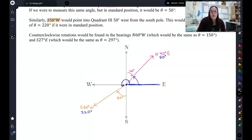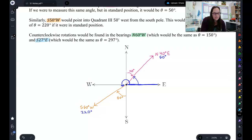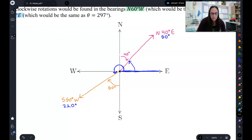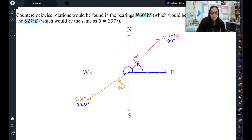So now that we've done that, I would like you to try two more. I want you to try north 60 degrees west, plot where it is on here, and then find the standard position angle, and south 27 degrees east. Plot it on here, and then find what it would be as a standard angle from the positive x-axis. So pause the video, try to plot those two just to get a little practice, and then come back and check your work.